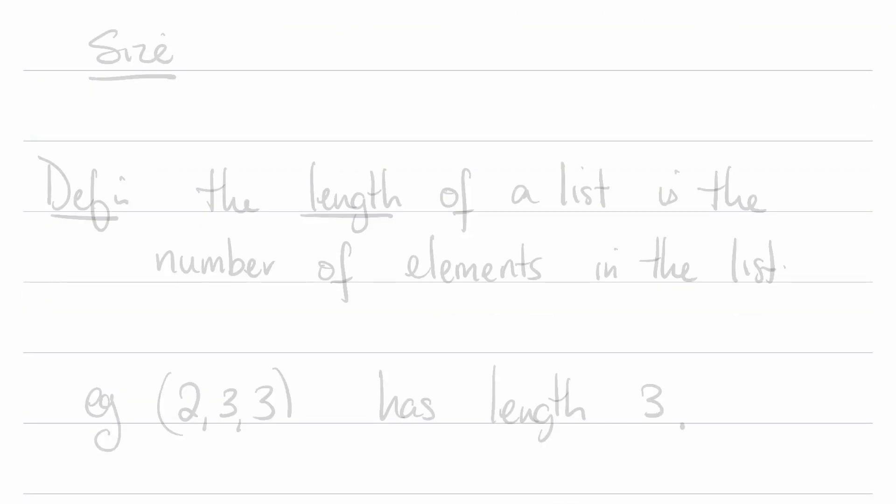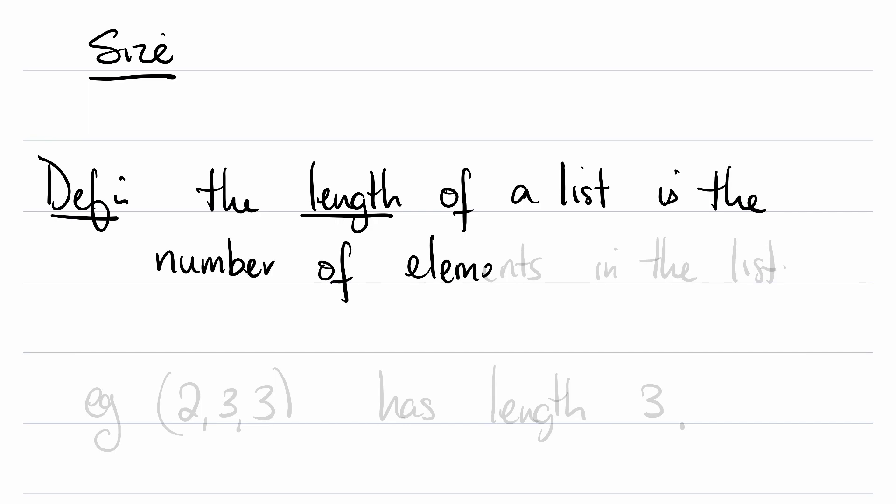Once we have an object, we can start describing that object. Let's talk about the size of lists. Definition: The length of a list is the number of elements in the list. So for example, (2, 3, 3) has length 3.